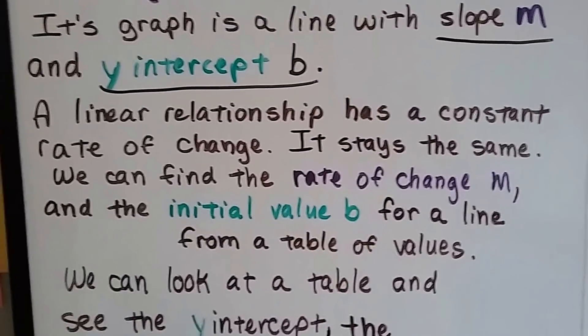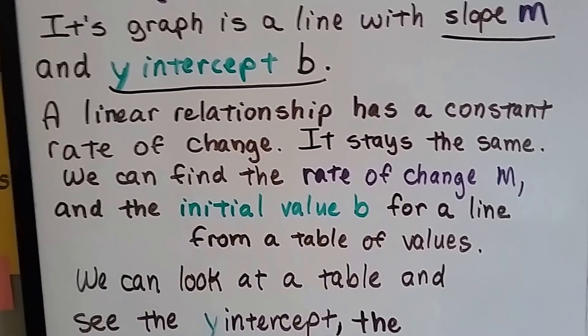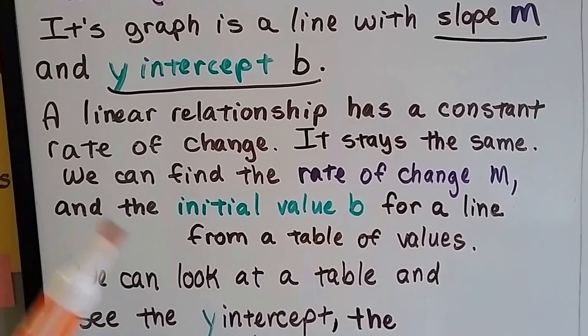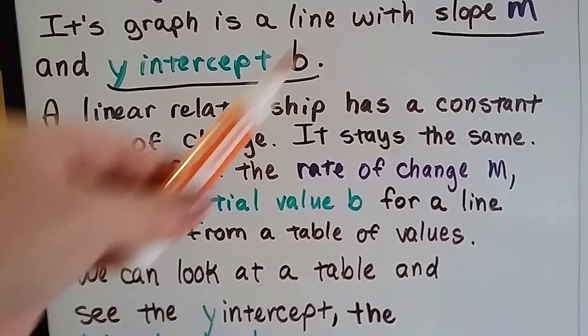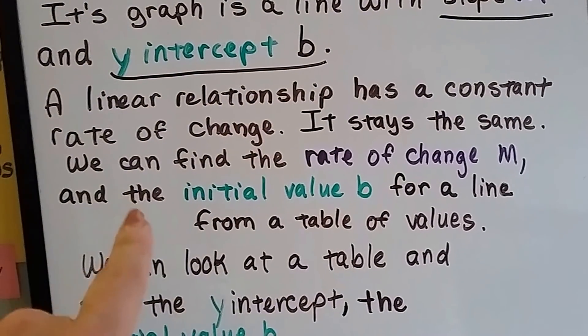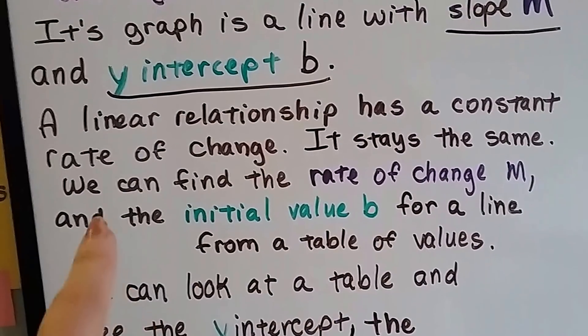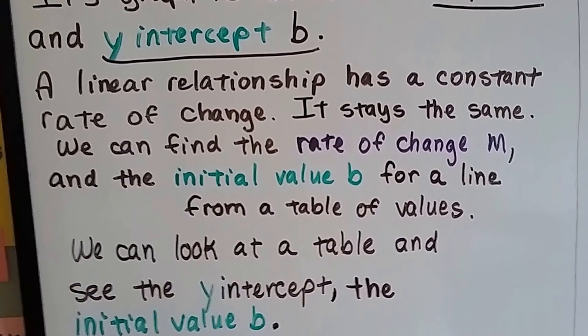A linear relationship has a constant rate of change. It stays the same. So its steepness stays the same. It moves like plus 3, plus 3, plus 3, or maybe it's plus 2, plus 2. But it's constant.